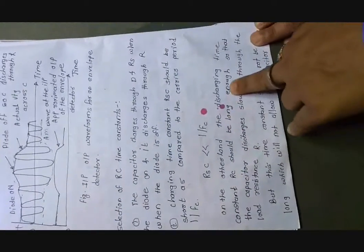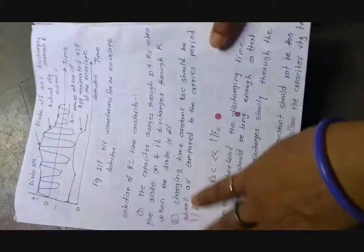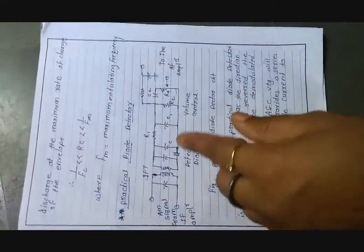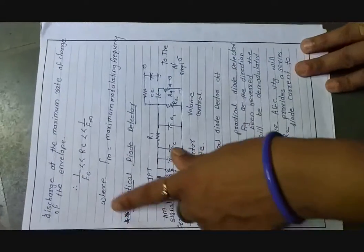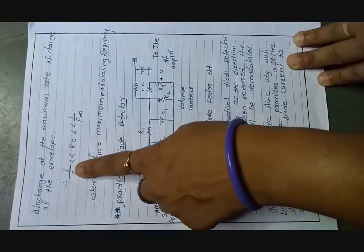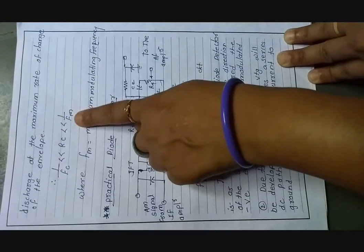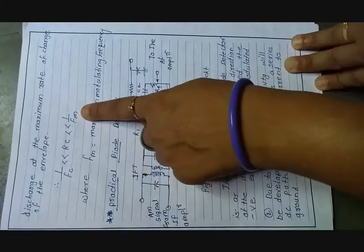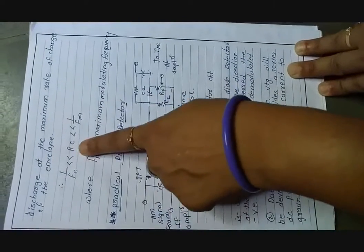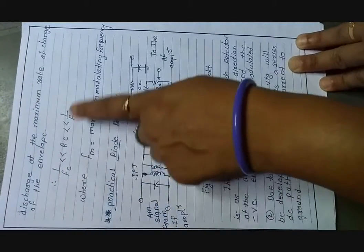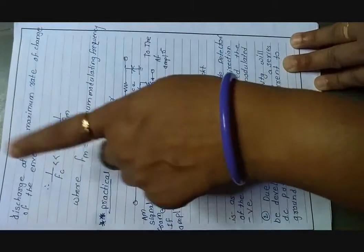On the other hand, the discharging time constant of the RC should be long enough so that the capacitor discharges slowly through the load resistance R. But this time constant should not be too long, which would prevent the capacitor voltage from discharging at the maximum rate of change of the envelope. The mathematical equation shows: carrier time period << RC time period << modulating time period. The modulating time period is greatest, RC is in the middle, and the carrier time period is the smallest.